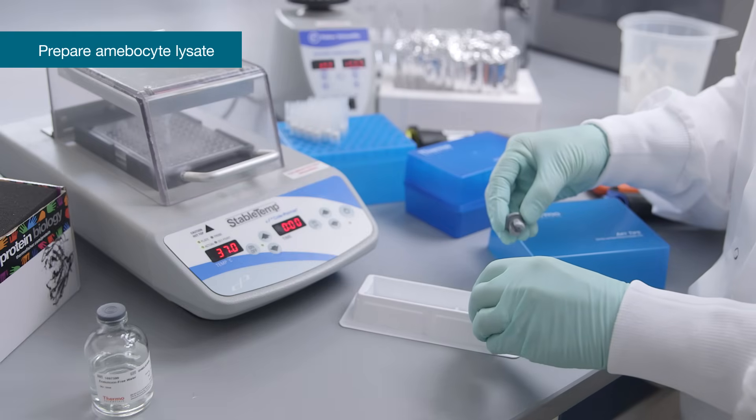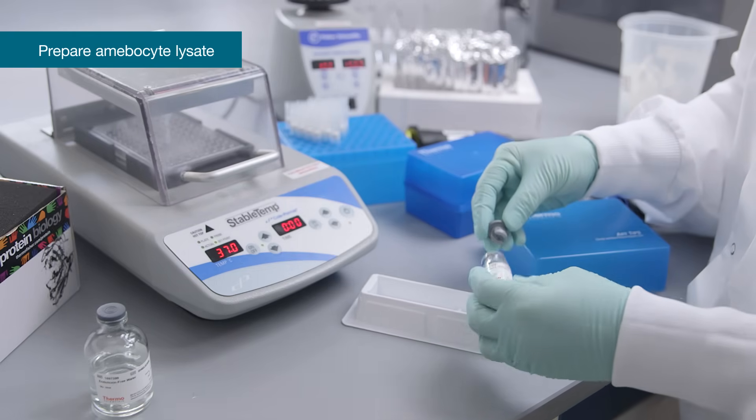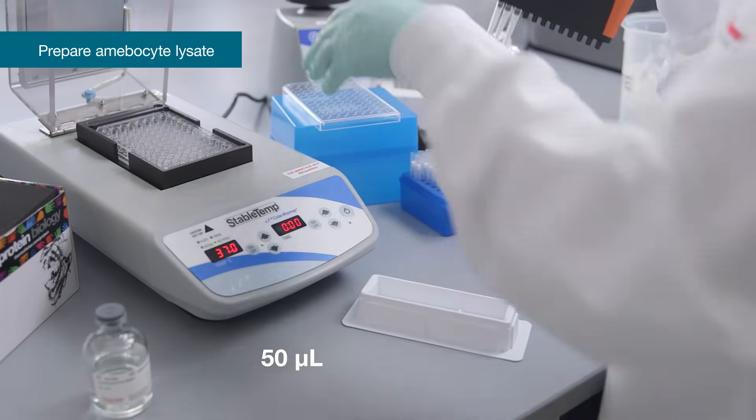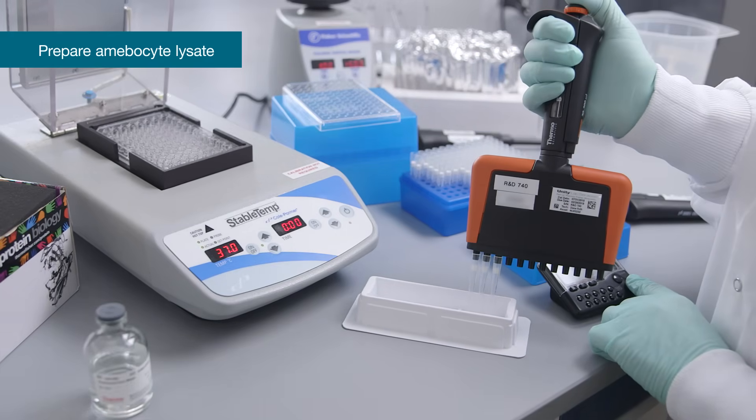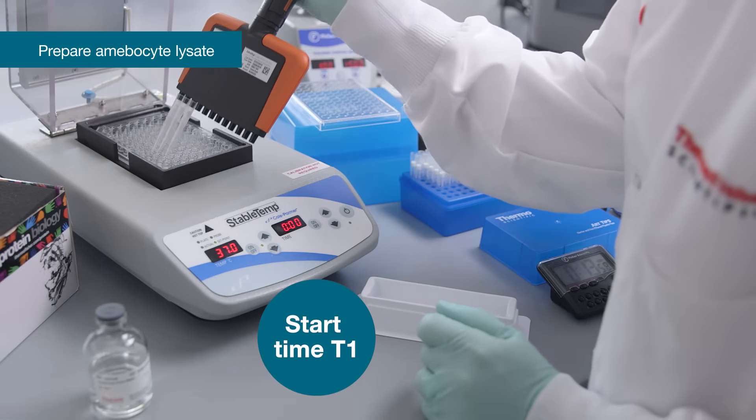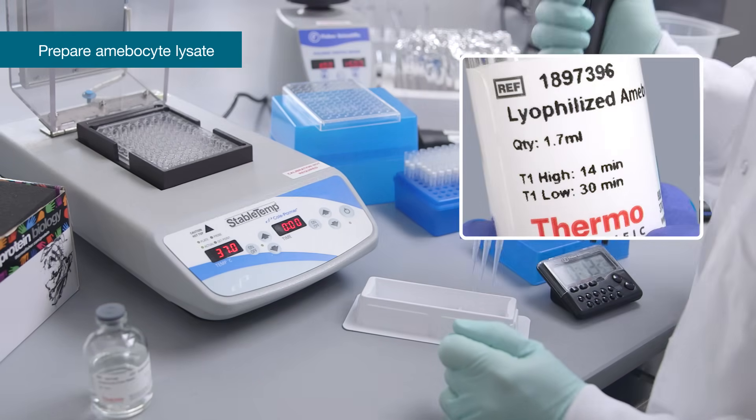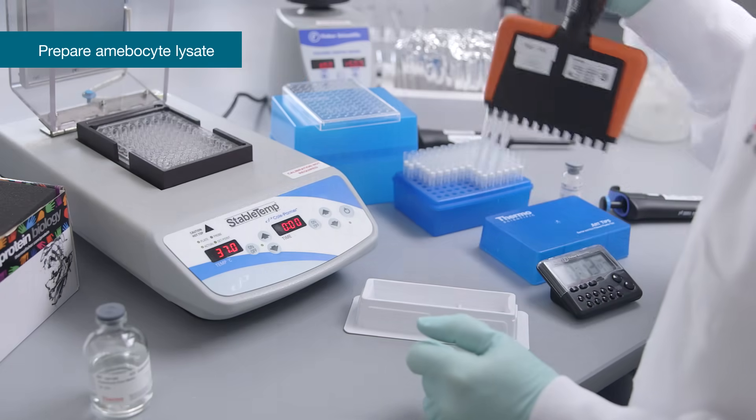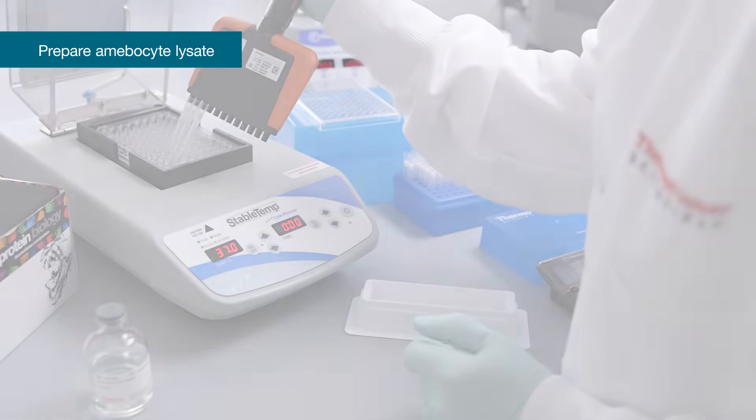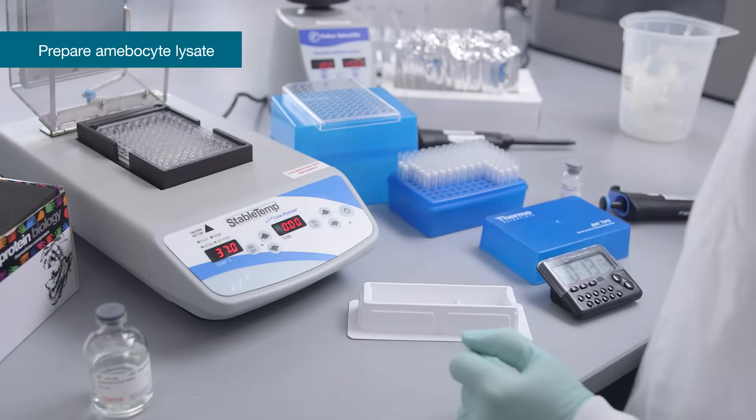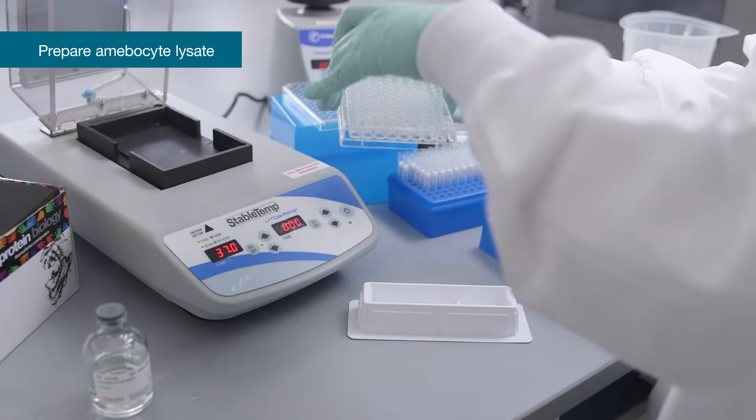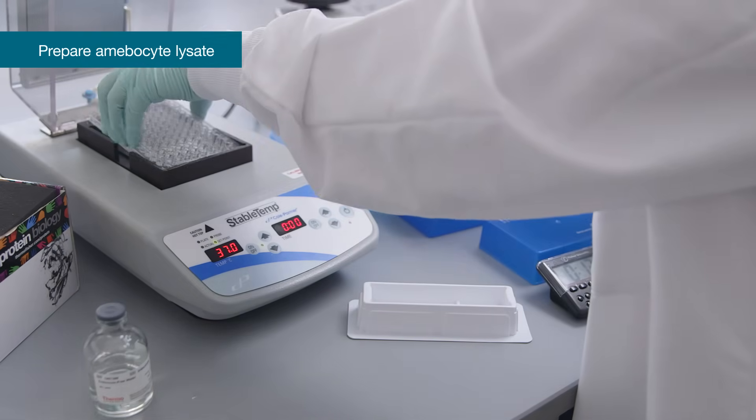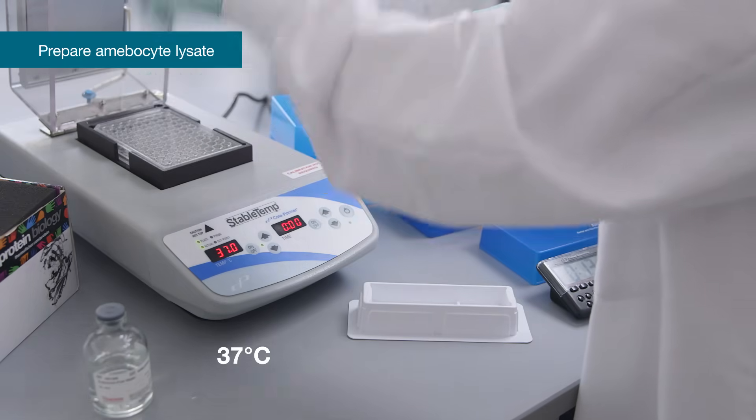Pour reconstituted lyophilized amebocyte lysate into the pyrogen-free reservoir. Using a multi-channel pipette, add 50 microliters per well of the reconstituted amebocyte lysate reagent. Start time T1 as the amebocyte lysate is added to the first wells. Note that the time T1 incubation varies between the high and the low standard ranges, as indicated on the vial. Once the amebocyte lysate reagent has been added to the plate wells, briefly remove the plate and mix by gently tapping 10 times on the side of the plate, avoiding spilling. Return the plate to the plate heater and resume the incubation at 37 degrees Celsius for the remaining time T1.